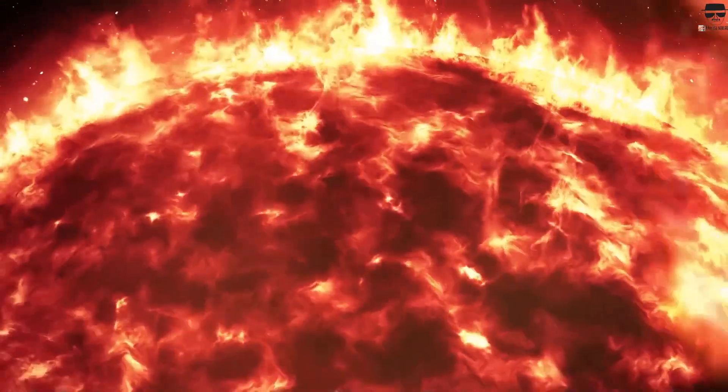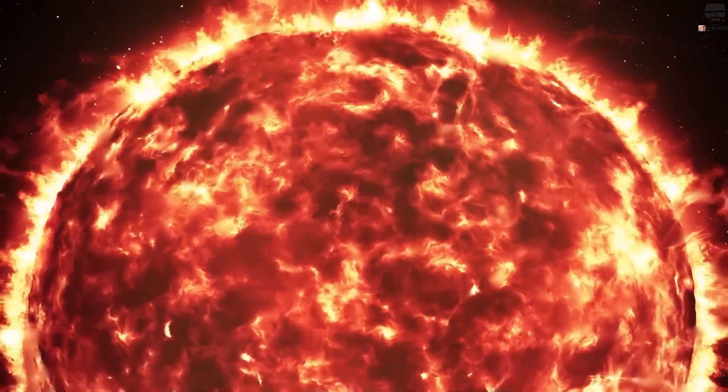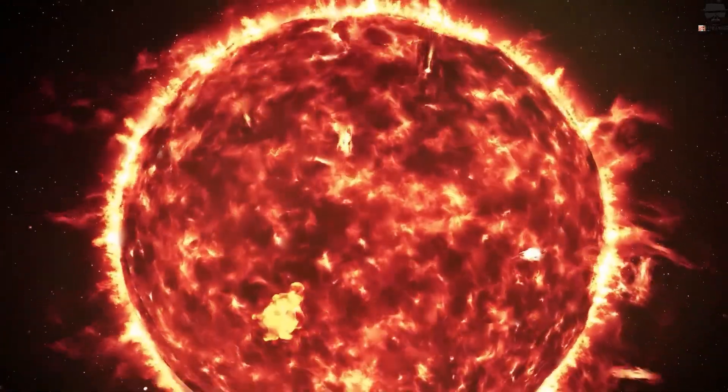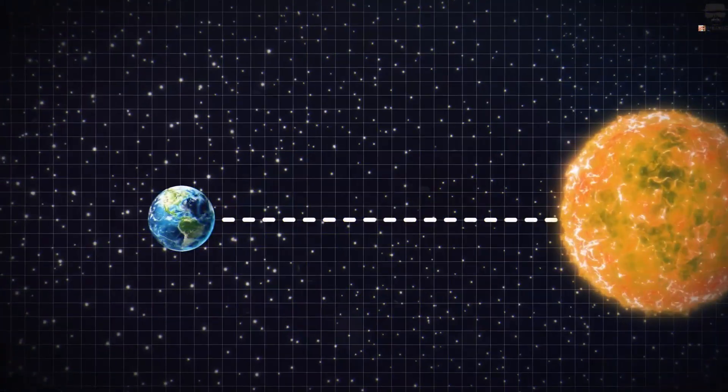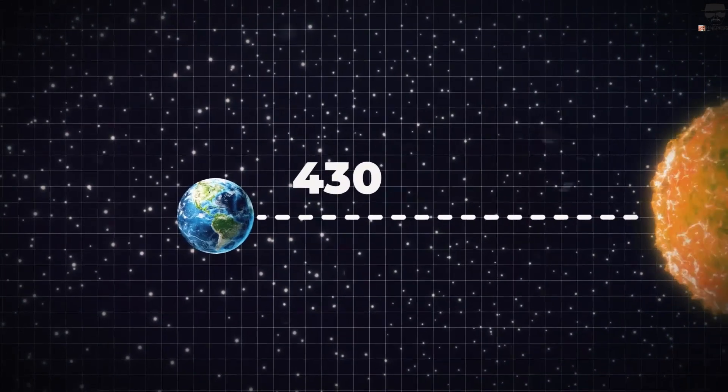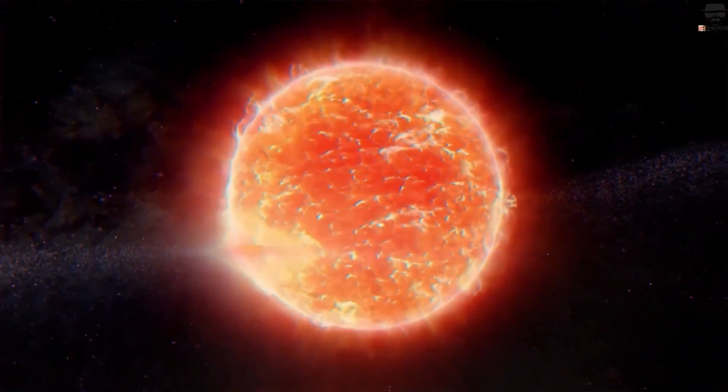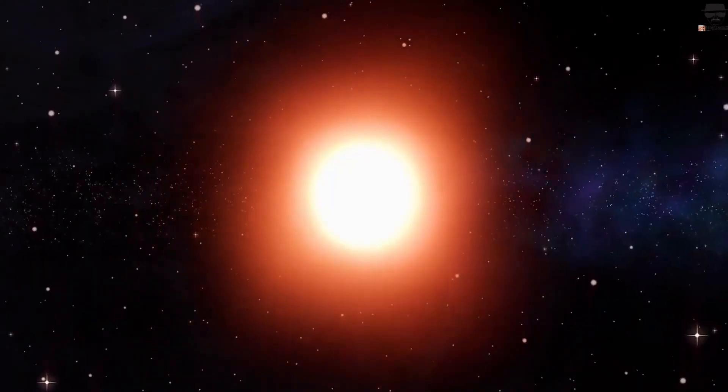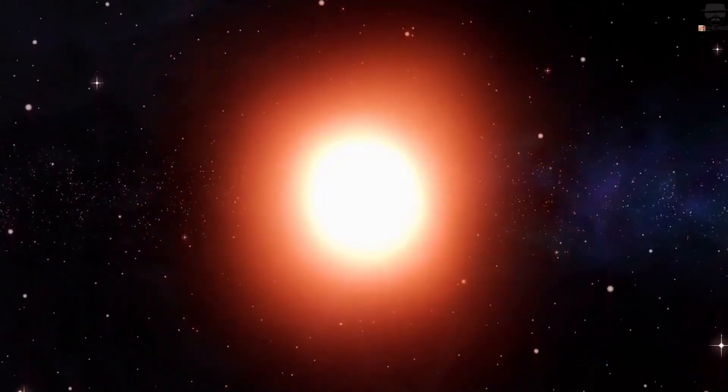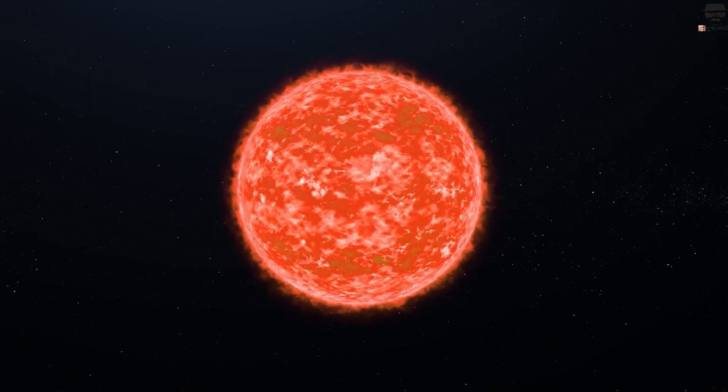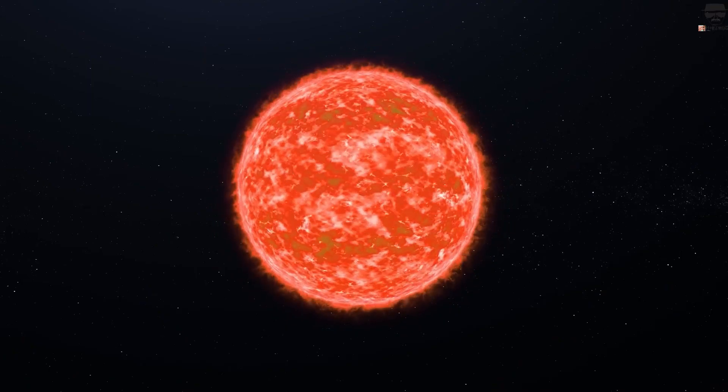Right now, Betelgeuse is absolutely enormous, irregularly shaped, and with an uneven surface temperature. Located approximately 640 light-years away, it's more than 2,000 degrees Celsius cooler than our Sun, but also much larger, at approximately 900 times our Sun's radius and occupying some 700 million times our Sun's volume.